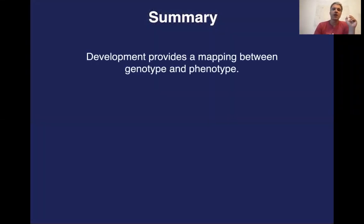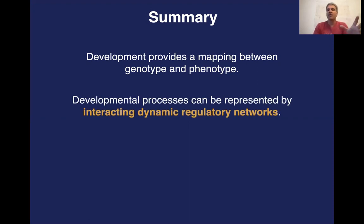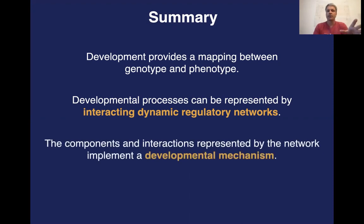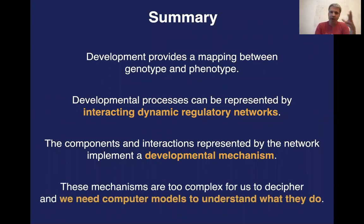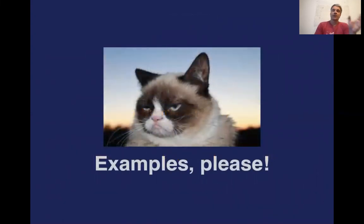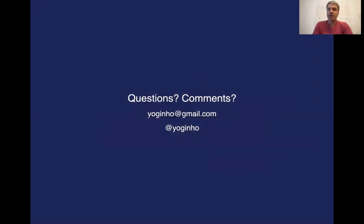If you want the mechanistic explanation of a developmental process, counterintuitively you not only need to let Humpty Dumpty fall off the wall, but you need — and that's the much more difficult task — to put Humpty Dumpty together again and see if the interactions actually do what you think they're doing. To summarize: development provides a mapping between genotype and phenotype. Developmental processes can be represented by interacting dynamic regulatory networks. The components and interactions implement a developmental mechanism, and these mechanisms are too complex for us to decipher just by mental simulation — we need computer models to understand. I'll provide two examples in the next lectures that illustrate these points.